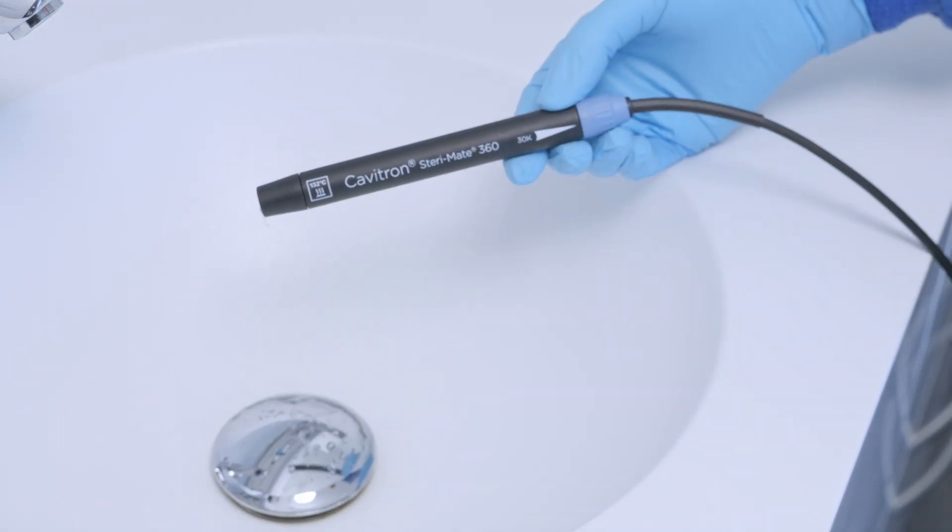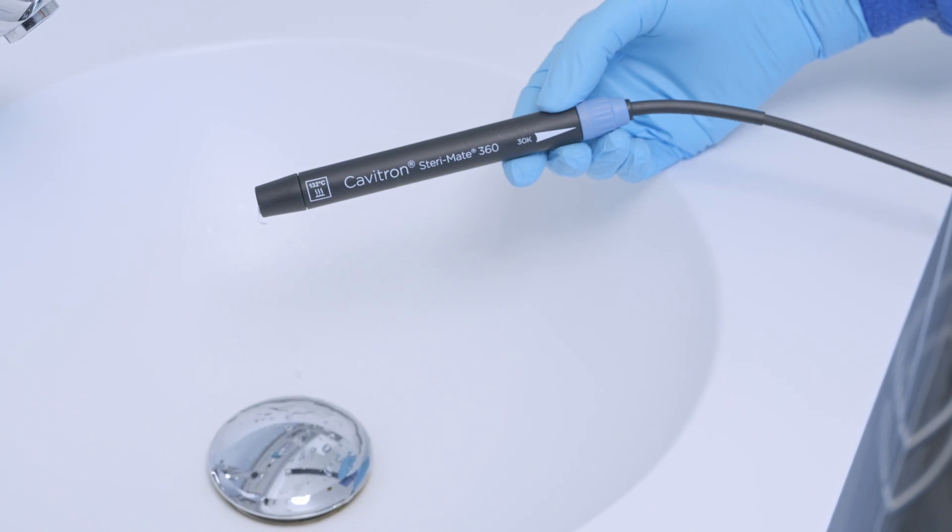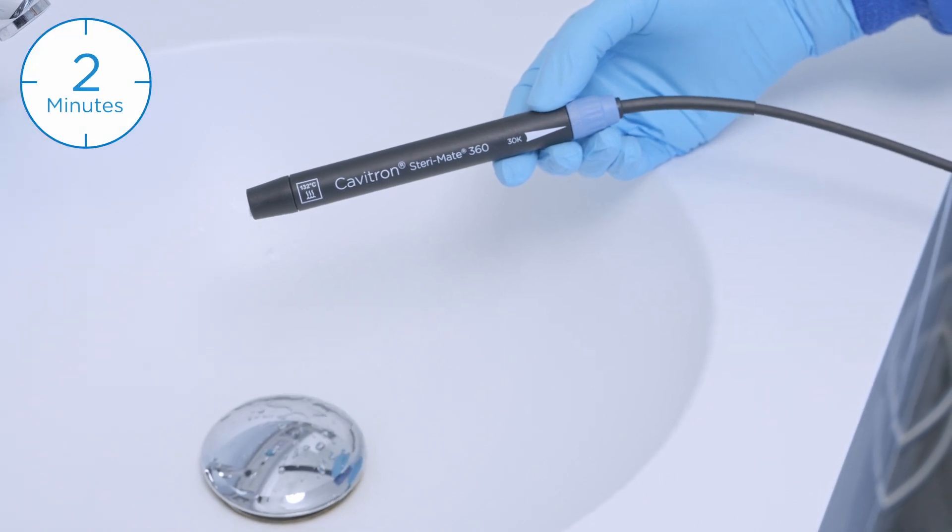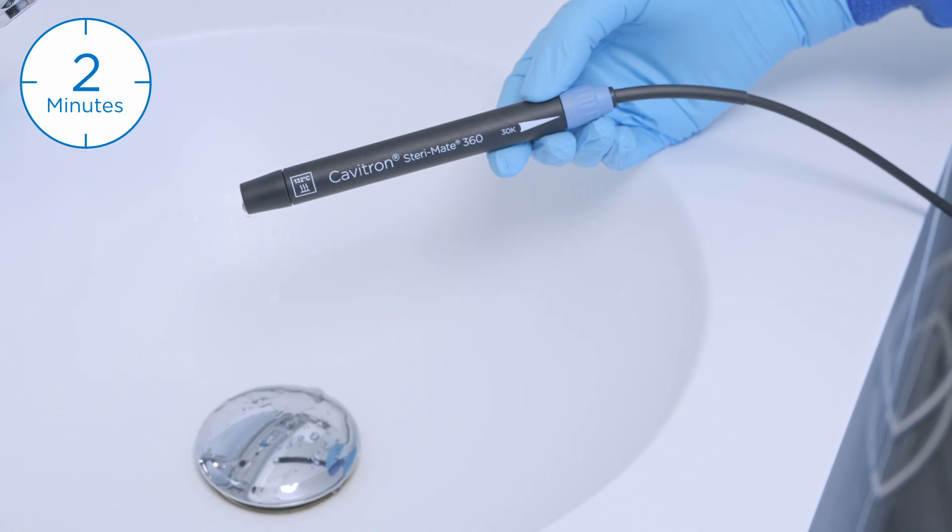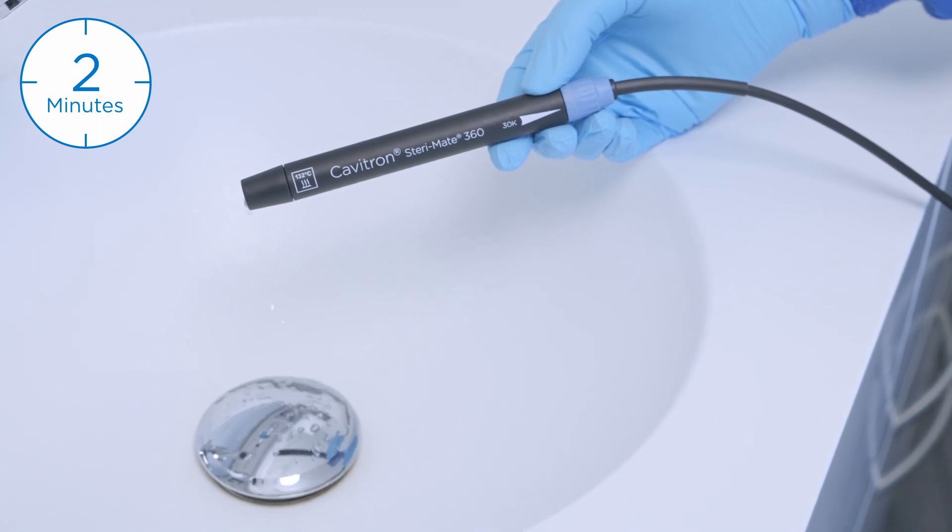Once again, operate the Cavitron system at maximum water flow for at least two minutes until all the water drains or all the sodium hypochlorite odor disappears.